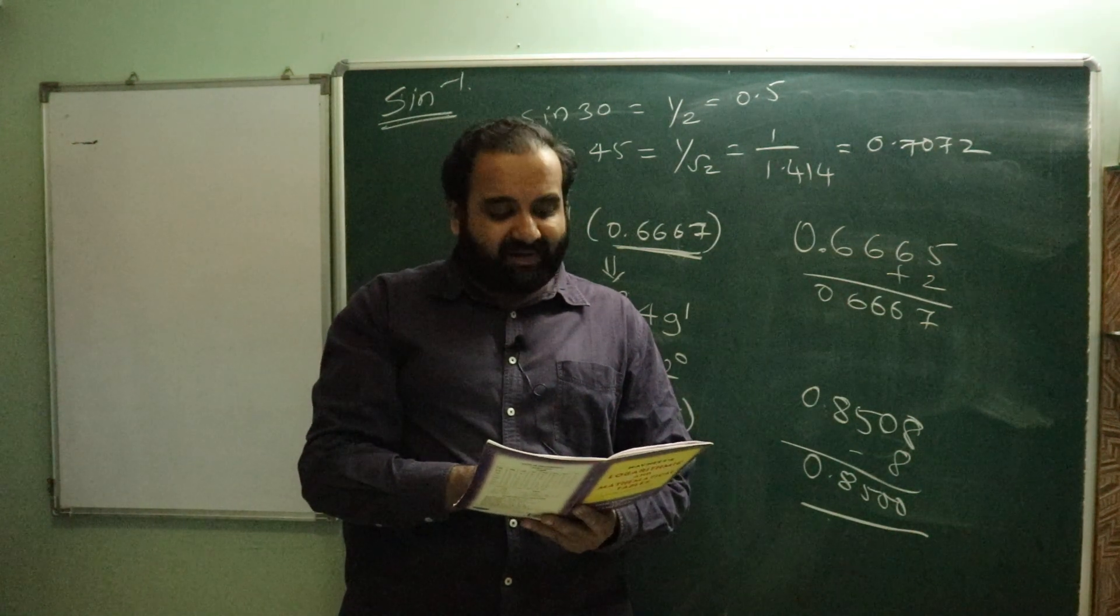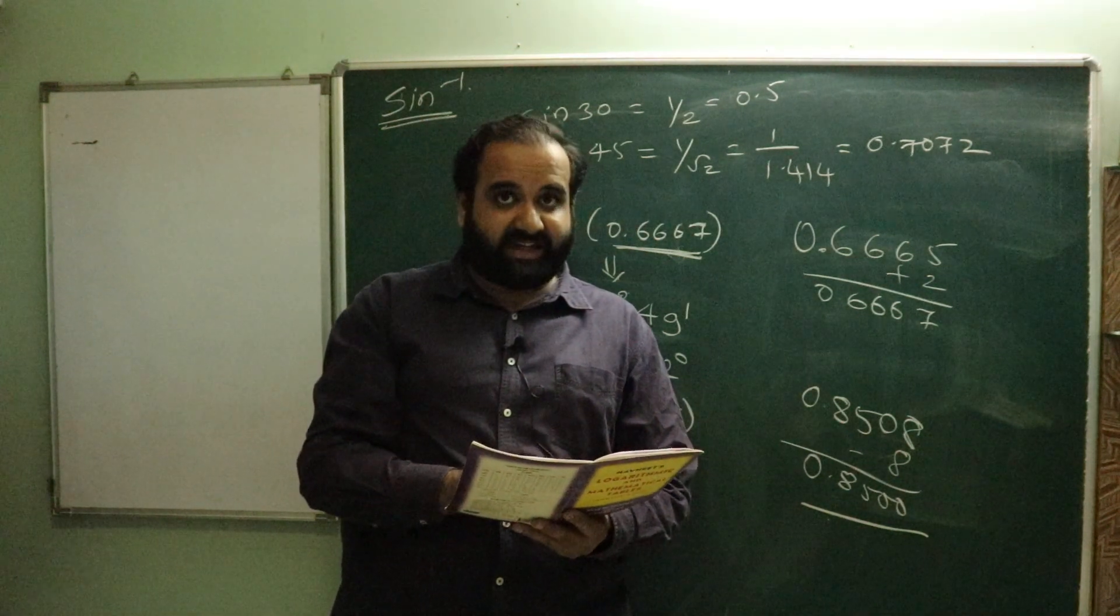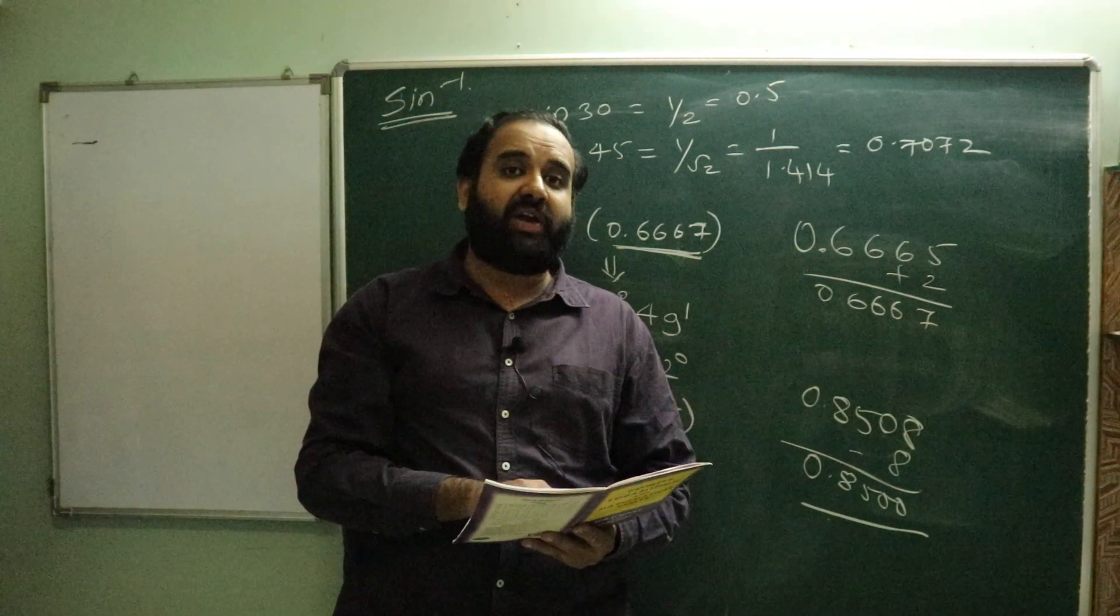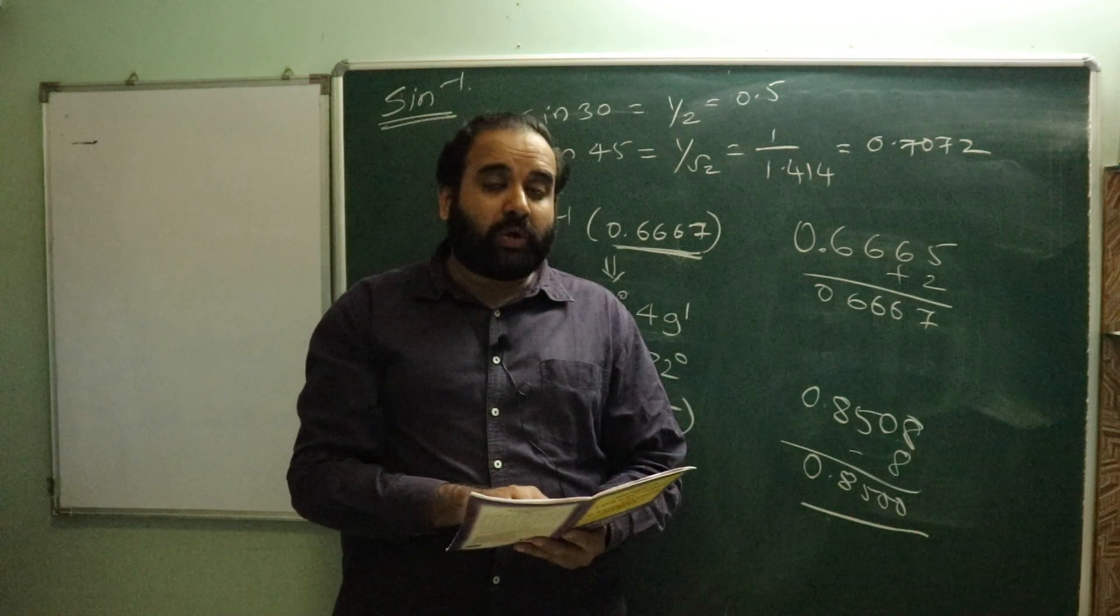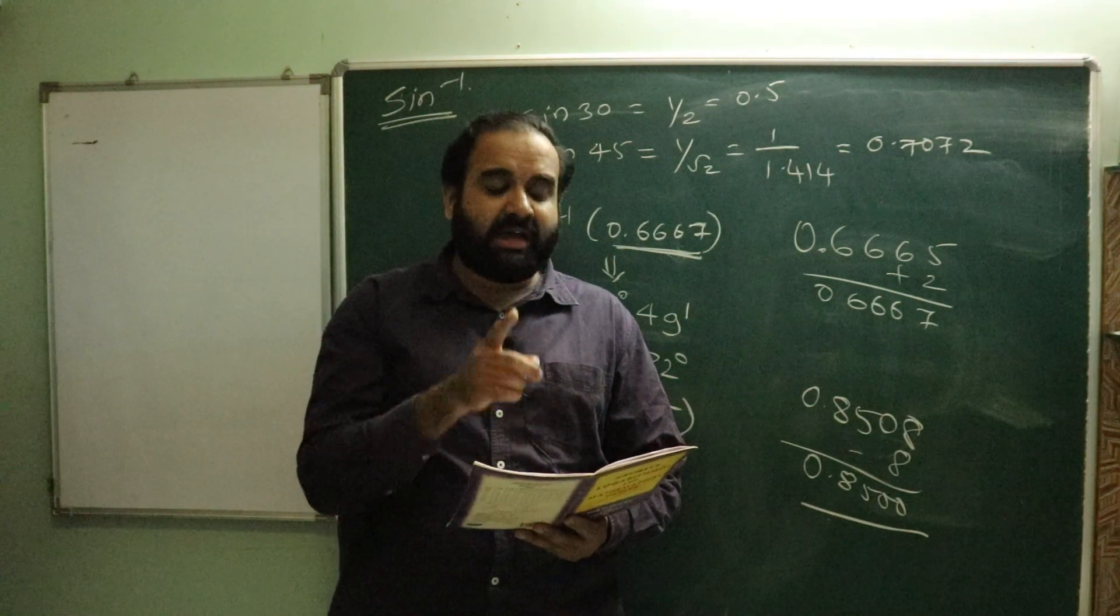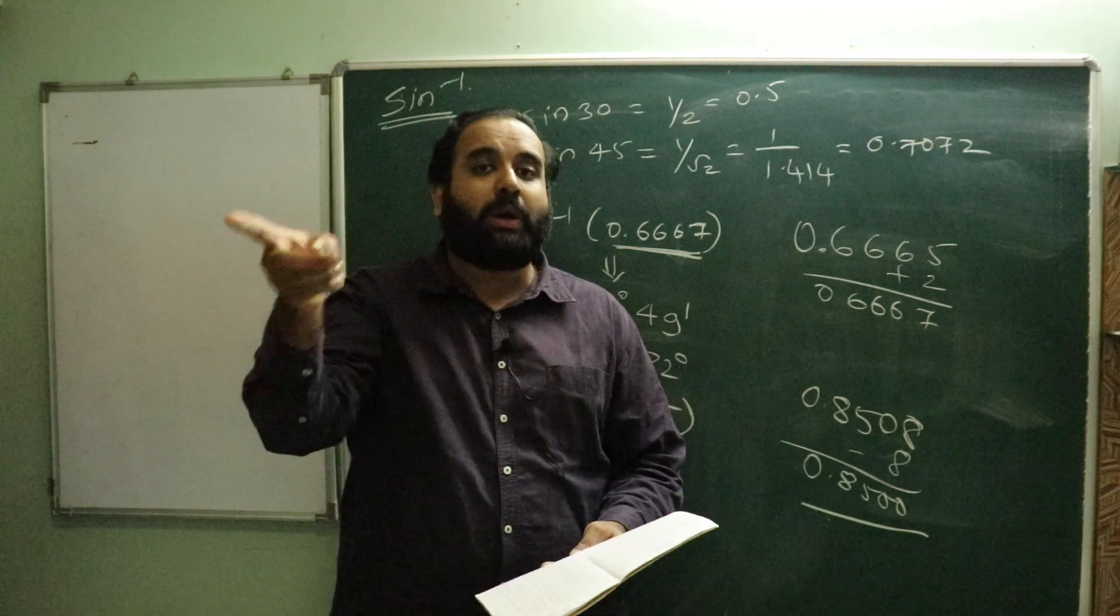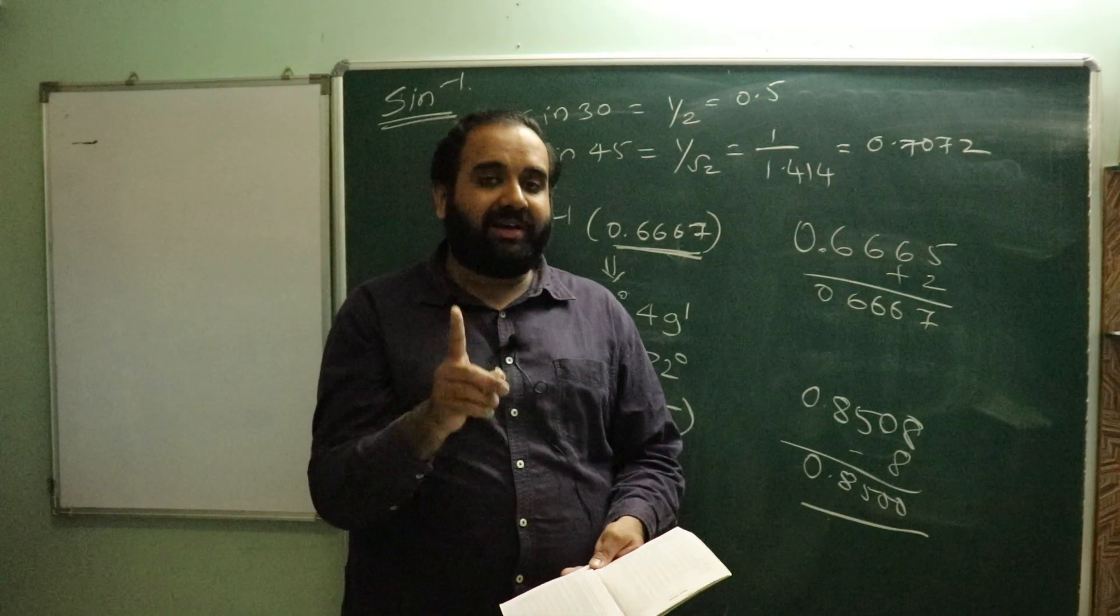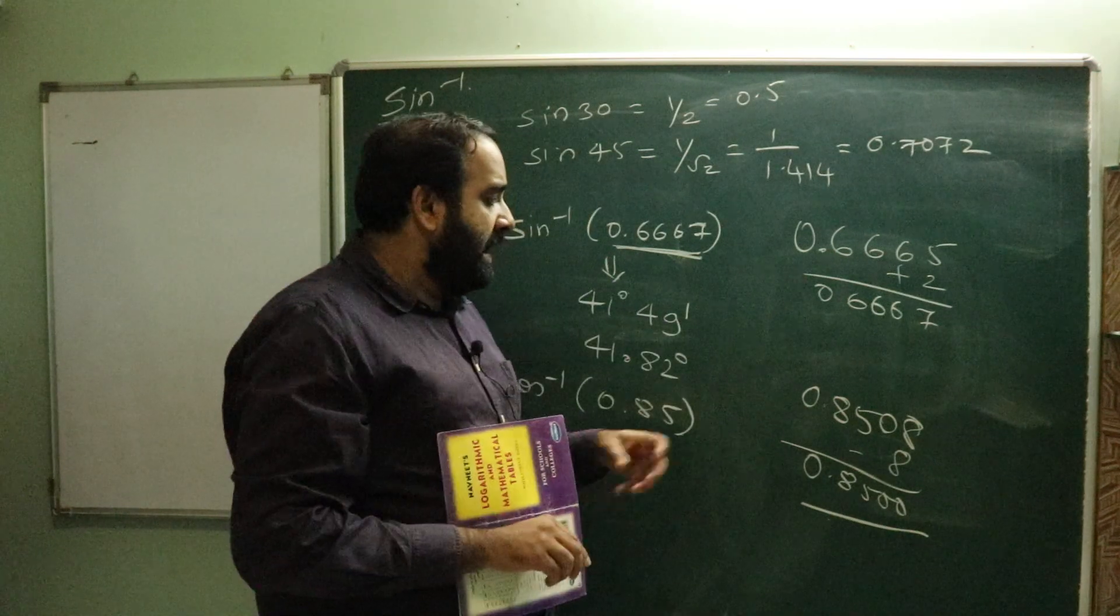So 0.8508 minus 8, if we do, I will get 0.8500. So this corresponds to what I need. But the most important difference is this. Now listen carefully. From 0.8508, what is shown straight up? 42 minutes is shown. And from the 8 column, what is shown up? Five dash, meaning five minutes.